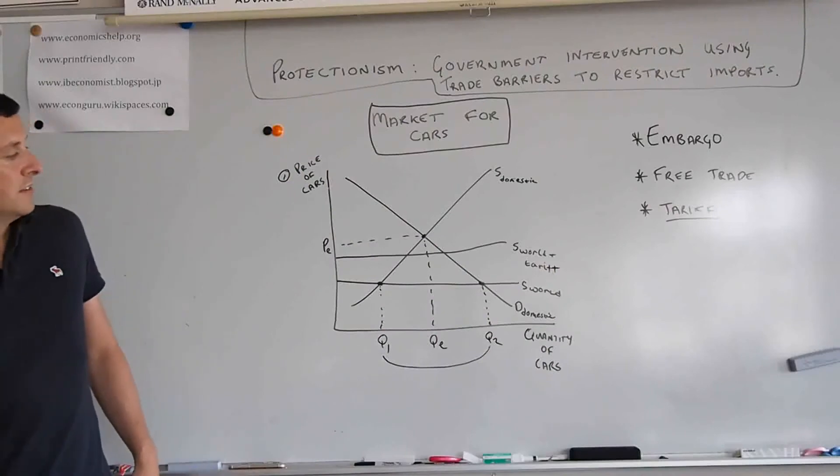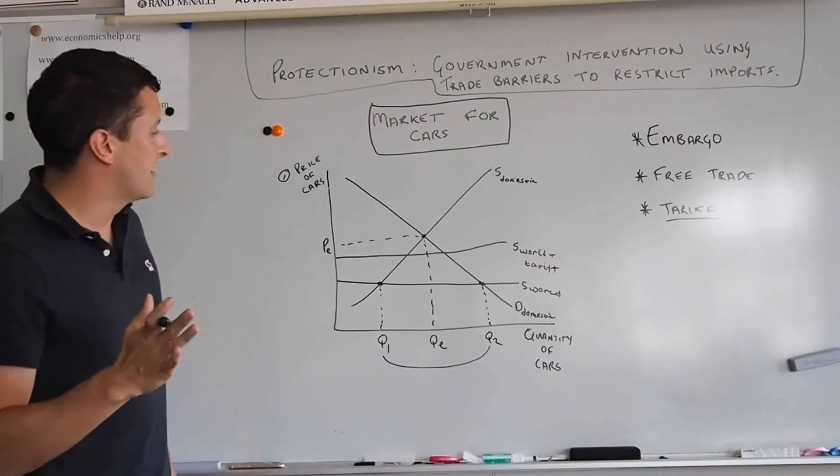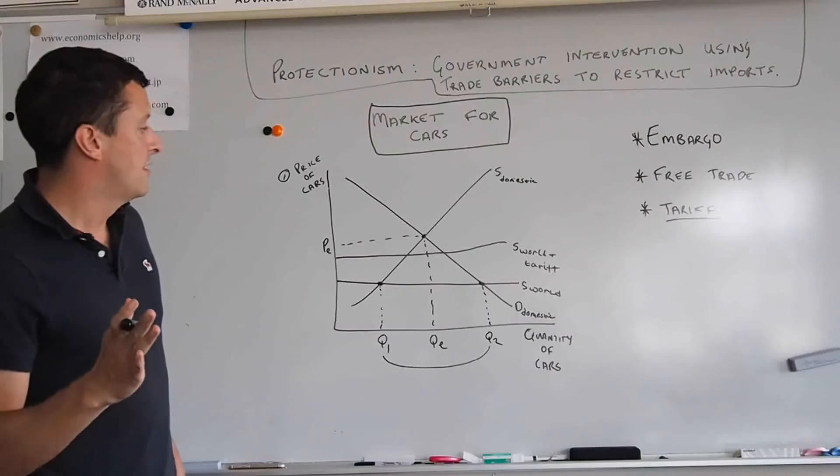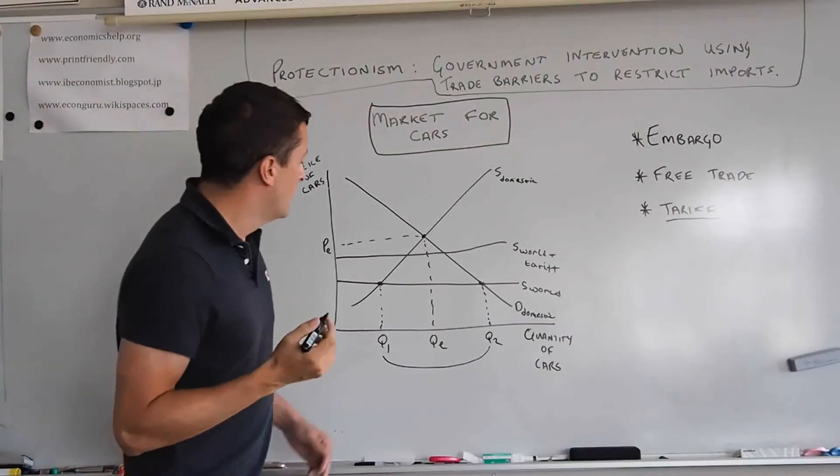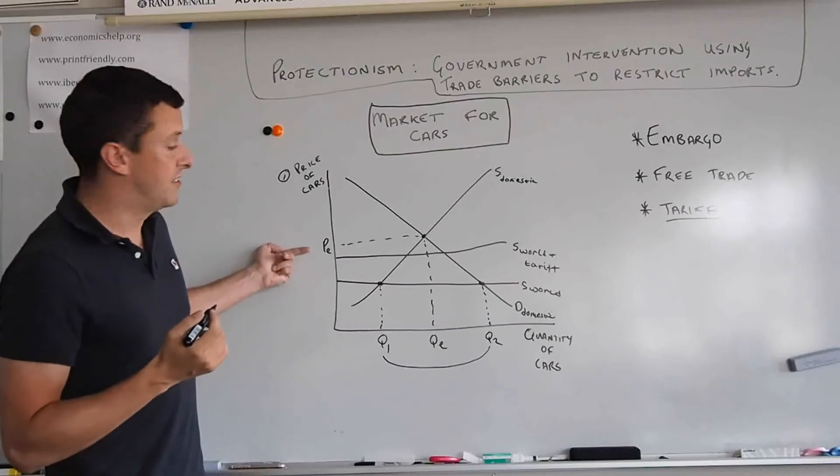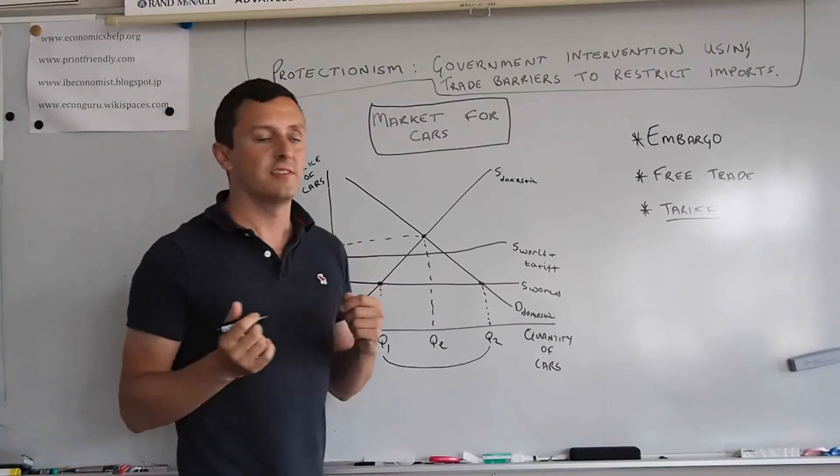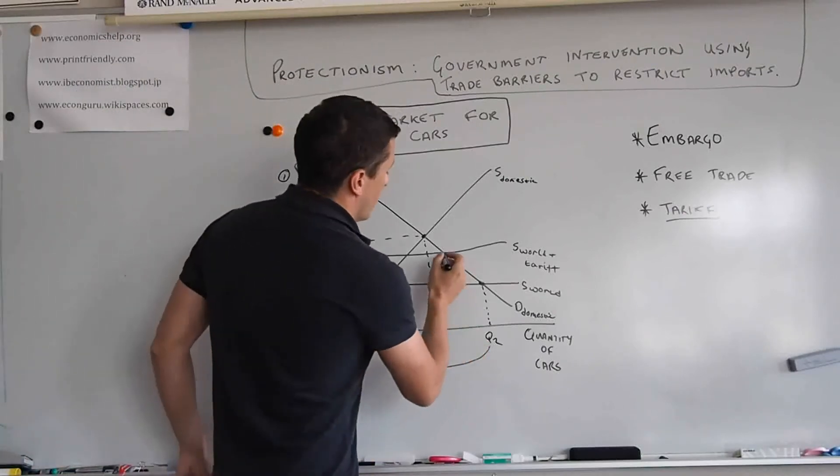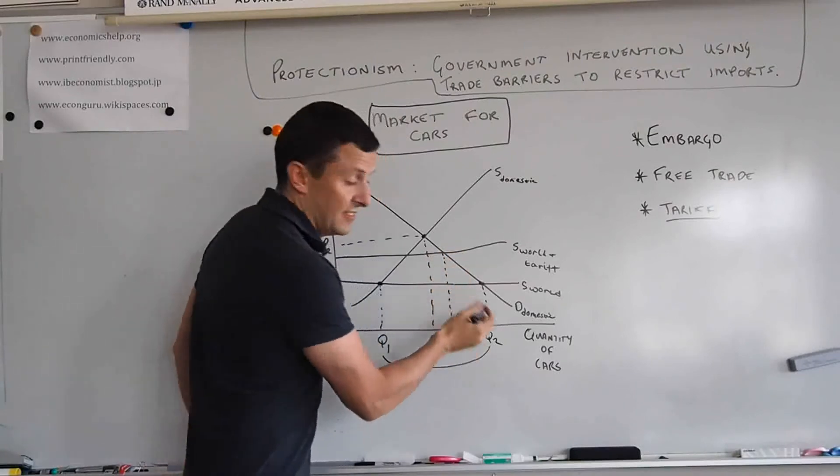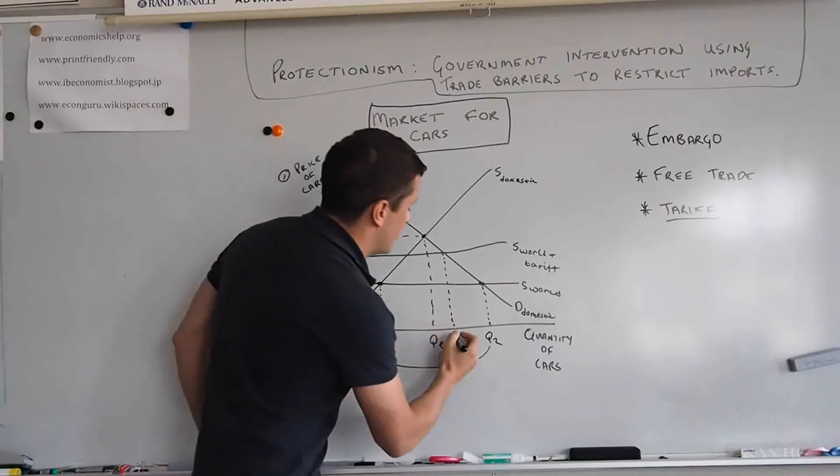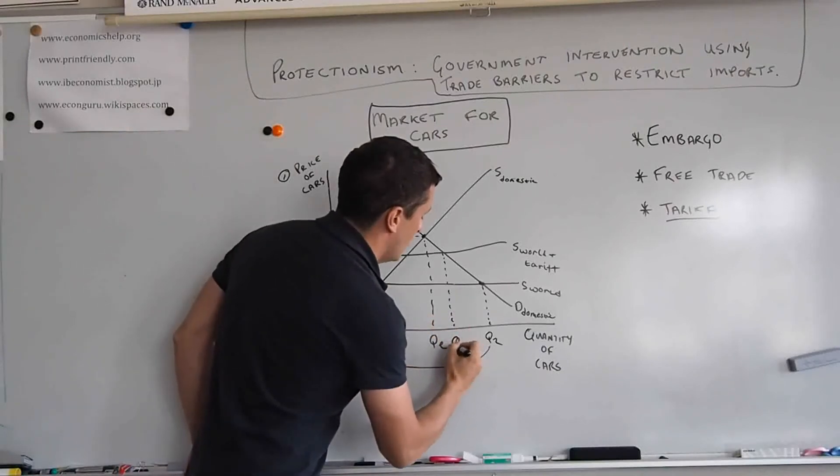S world plus tariff. So you can start to see the effects of a tariff on the car market. So what's happened here is that obviously by introducing the tariff, you have increased the price. So with the increase in price, the quantity demanded has shifted to Q3.